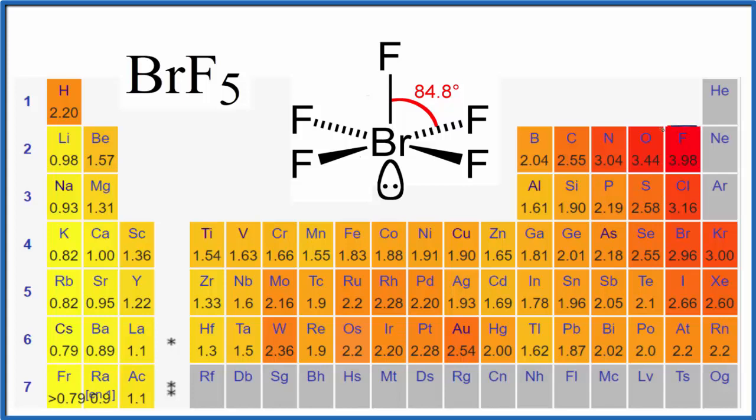Here's fluorine at 3.98 and bromine at 2.96. We have a pretty big difference in electronegativity, which means these bonds between the fluorine and the bromine are going to be polar bonds. What that means is we have a pair of electrons...